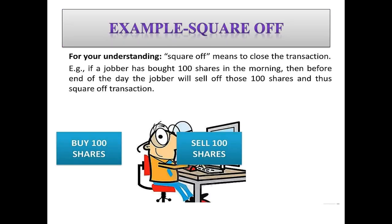Let's look at an example for better understanding. If a jobber has bought 100 shares in the morning, then before the end of the day, that person will sell off those 100 shares, and thus this will be called squaring off the transaction.